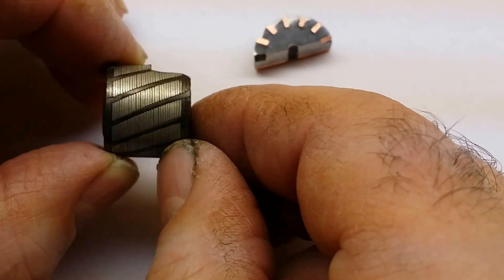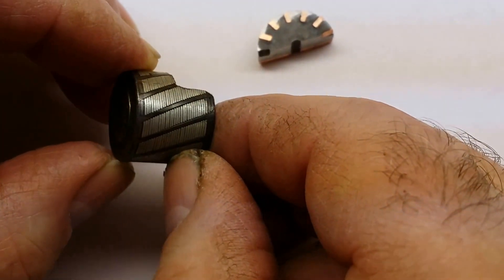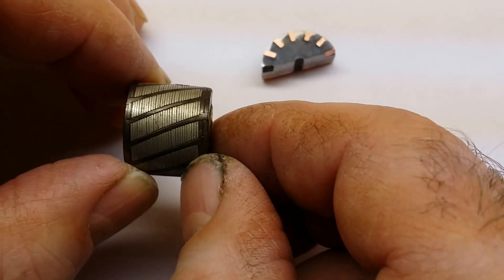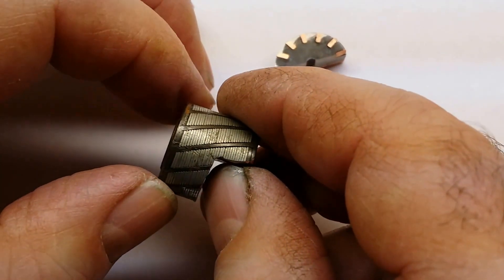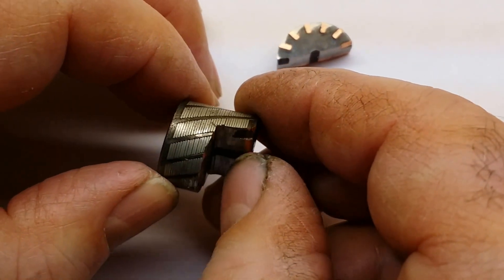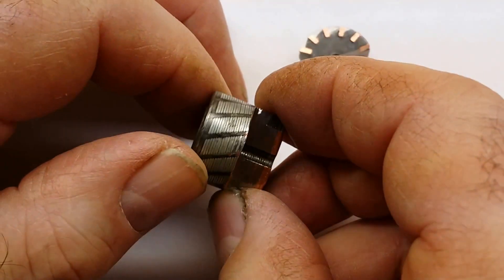Now here we have a rotor from a shaded pole motor. It is made up of many laminated thin plates of mild steel, which basically means it does not retain any magnetism once it is removed from a magnetic field.